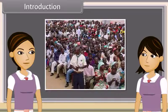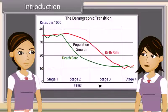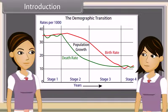Due to rapid growth in population, we observe population explosion. It is mainly due to a rapid decline in death rate and an increase in lifespan.